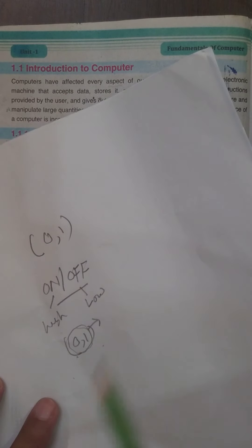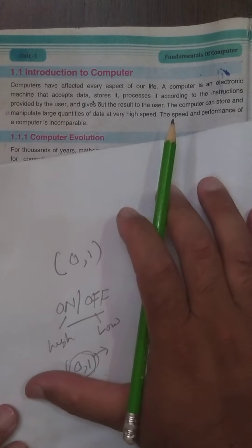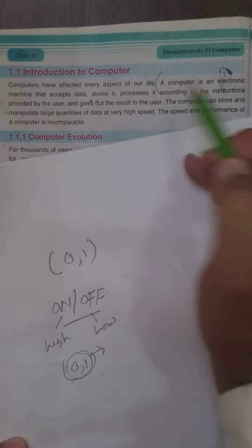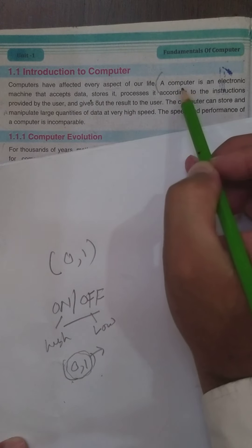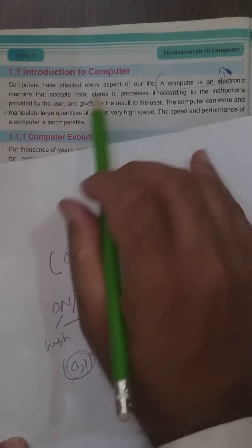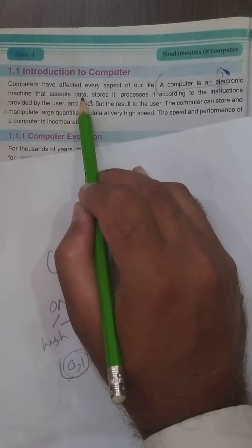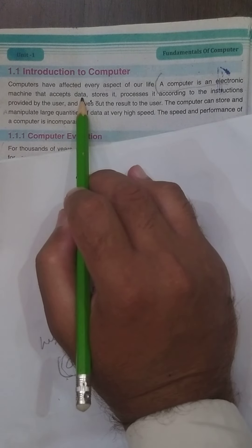Introduction to Computer paragraph میں computer کی definition دی گئی ہے — بچے اس کو brackets ڈالیں اور underline کریں۔ Computer کی definition یہ ہے: 'A computer is an electronic machine that accepts data' — جو data accept کرتا ہے process کرنے کے لیے۔ For example کوئی addition یا subtraction کرنی ہو تو computer کو data دینا پڑے گا۔